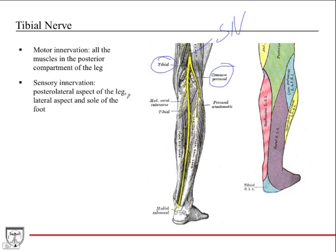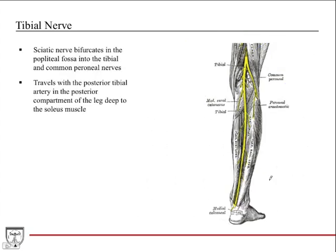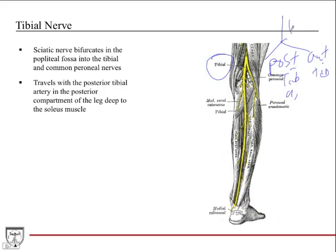Sensory innervation of the tibial nerve covers part of the posterior-lateral aspect of the leg via the sural nerve, as well as the lateral aspect and sole of the foot. The tibial nerve travels down with the posterior tibial artery, since the popliteal artery bifurcates into the anterior and posterior tibial arteries in the same region.